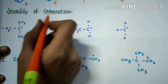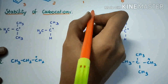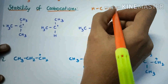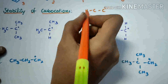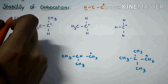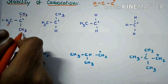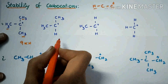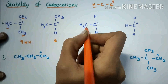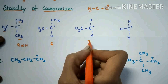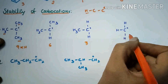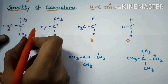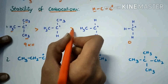Next, stability of carbocations. Which hydrogens are alpha hydrogens? The hydrogen attached to the carbon which is in turn attached to the carbocation — that is the alpha hydrogen. Here, these are alpha hydrogens — total nine. Here, six alpha hydrogens. In this compound, three alpha hydrogens. Here, there are no alpha hydrogens; it is methyl. So the stability is in this order.